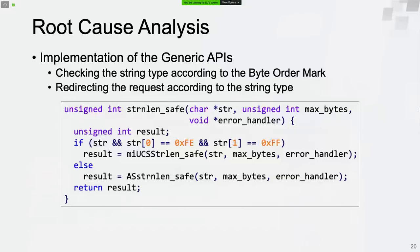Taking StringLengthSafe as an example to illustrate how the generic functions work: the function checks the string type according to the first two bytes of the string. The string will be recognized as a Unicode string if the first byte is FE and the second byte is FF — otherwise it will be recognized as an ANSI string. Actually, FE-FF are the bytes of the byte order mark in big endian format. The request will be redirected to the appropriate functions according to the string type.